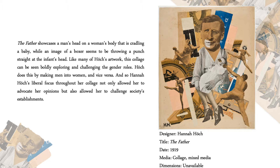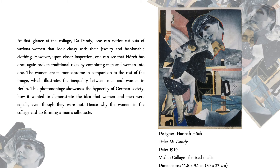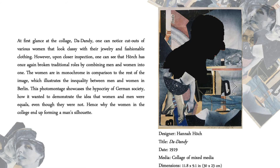Another fun fact: when Hannah submitted her work for the first international Dada fair, artists like Heartfield tried to have her work removed. But the fact that she was dating Hausmann at the time also helped, since he was a leading member of the group and even tried to withdraw his own work if they didn't allow her to participate. This next collage is called "Dada Dandy" — a composition filled with photos where at first glance you see women full of jewelry and fashionable clothing. However, taking a closer look, you can see the women are in monochrome, illustrating the sense of inequality between men and women in Berlin.